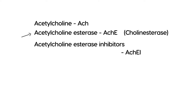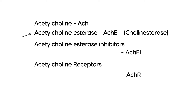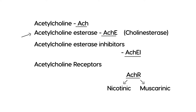There are also acetylcholine receptors, abbreviated ACHR. There are two types: nicotinic and muscarinic. I'll keep the abbreviations and draw a diagram to illustrate how this works.